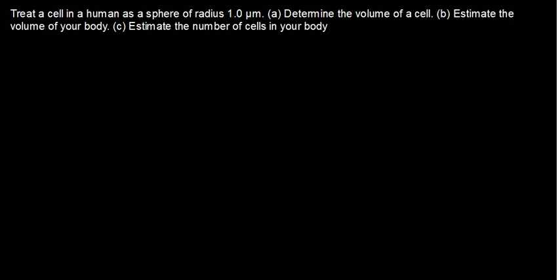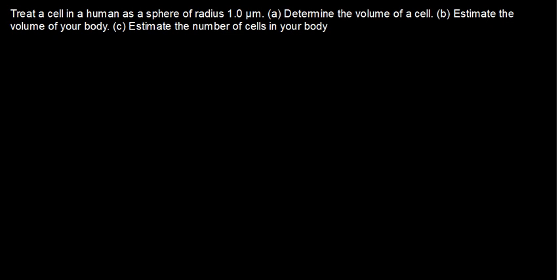What is happening here is we have been told to treat the cell in a human as a sphere. So basically, we are just finding the volume of a sphere. The formula to find the volume of a sphere is V = (4/3) π R³. This expression is going to give us the volume of the cell.